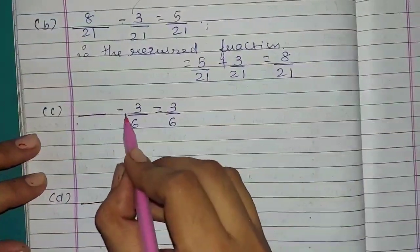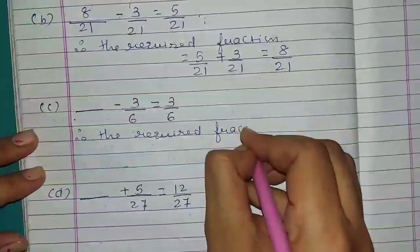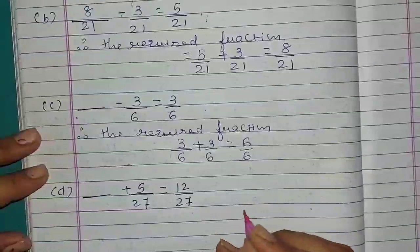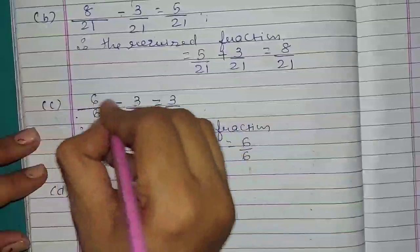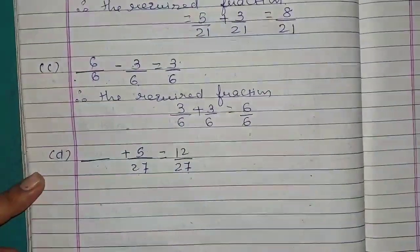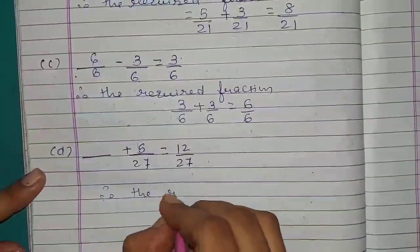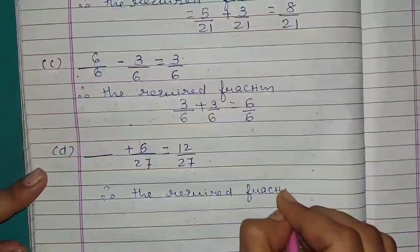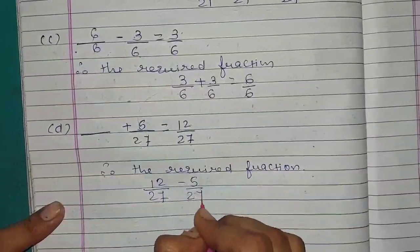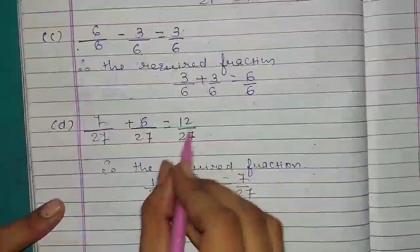C: dash minus 3 upon 6 equals 3 upon 6. Shifting gives 3 upon 6 plus 3 upon 6 equals 6 upon 6. So the required fraction is 6 upon 6, and 6 minus 3 equals 3 with the same denominator. D: dash plus 5 upon 27 equals 12 upon 27. Shifting gives 12 upon 27 minus 5 upon 27 equals 7 upon 27. The required fraction is 7 upon 27, since 7 plus 5 equals 12. In this entire question we shifted the fractions to find the missing fractions.